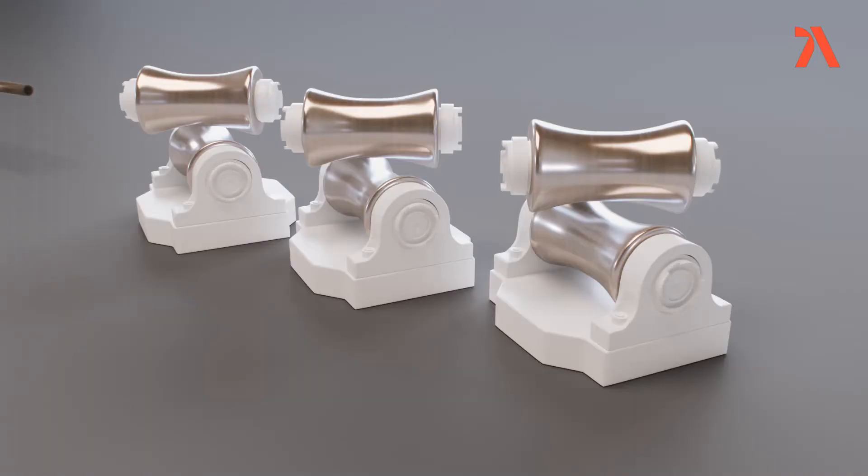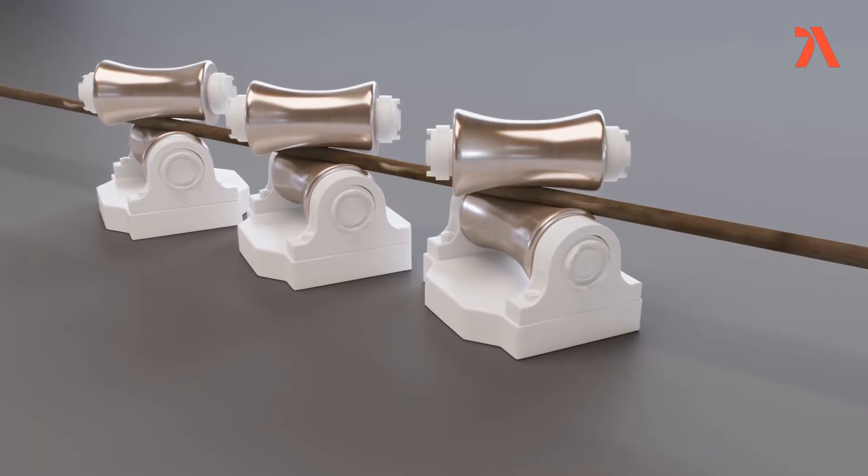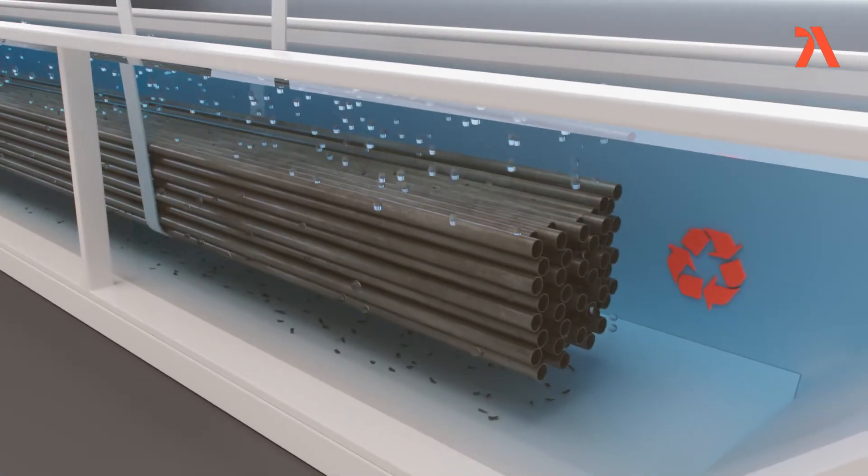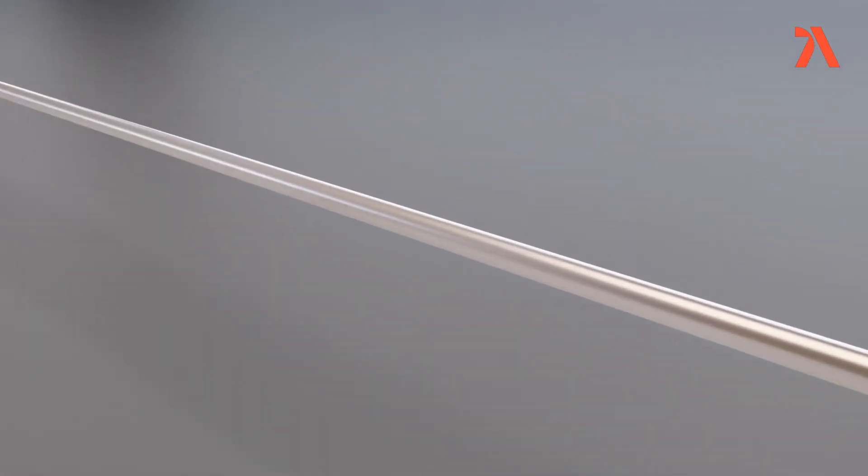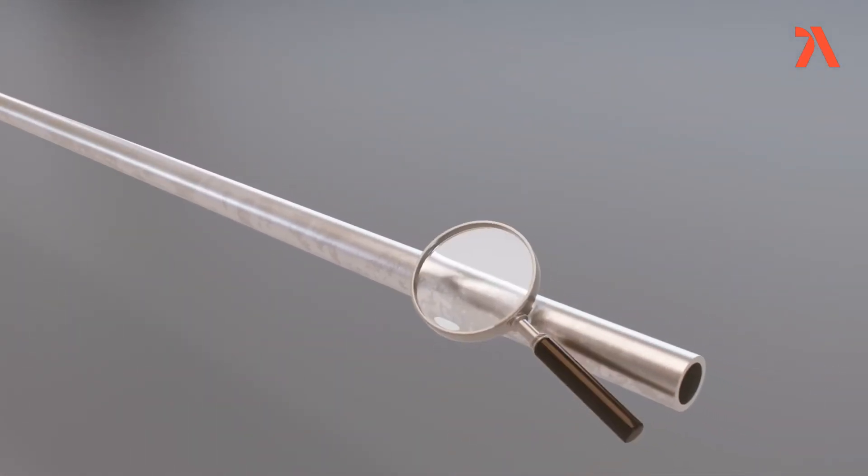The hollows are straightened and pickled in acid to remove glass and metal oxides. After inspection, the hollows are ready for production to steam-generated tubes.